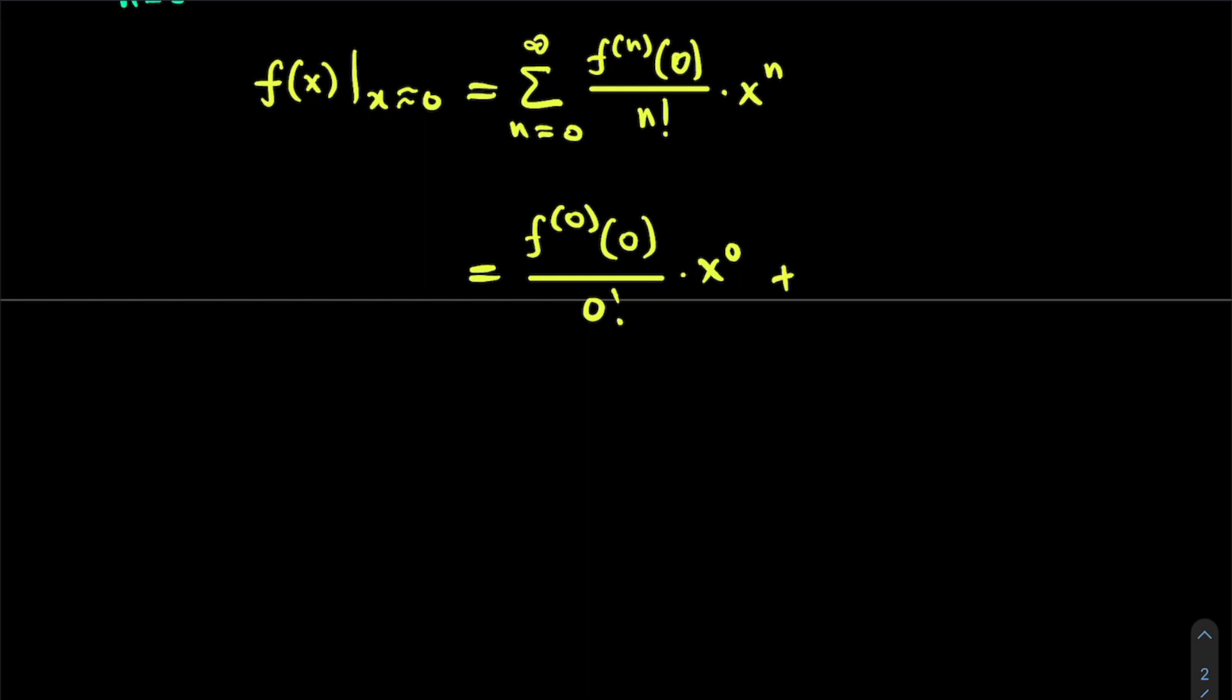Then we add to this the next term, n is equal to 1, which is the first derivative of our function f(x) filled in at x is equal to 0, divided by 1 factorial, times x to the power of 1, and so on and so on.